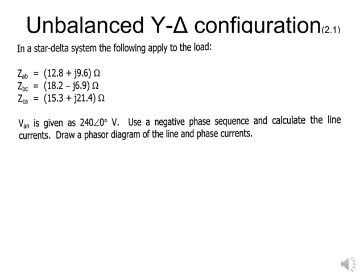We are told to use a negative phase sequence — that is the cba sequence — and to calculate the line currents and draw a phasor diagram showing both the line currents and the phase currents. So there are two things to calculate: the line currents, and the phasor diagram showing both line and phase currents.